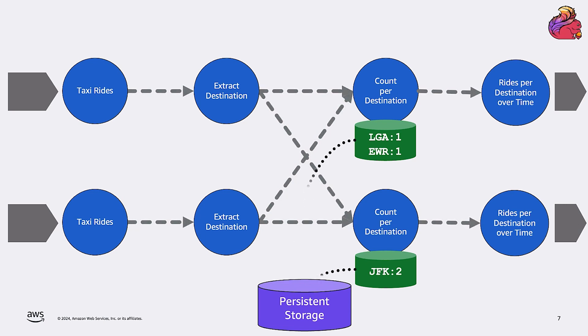Also, checkpoints are a snapshot of the state of the entire application at a consistent point in time. Flink executes checkpoints automatically at a fixed period. You can configure this period, but it is usually quite frequent, let's say, for example, every minute.